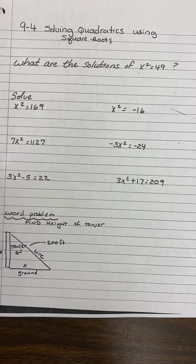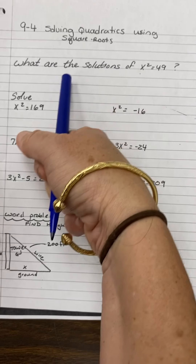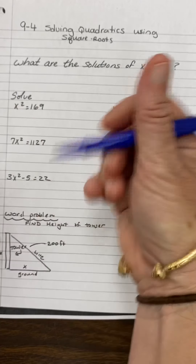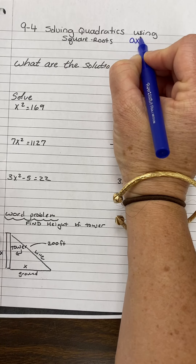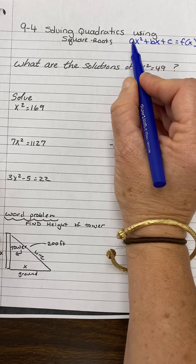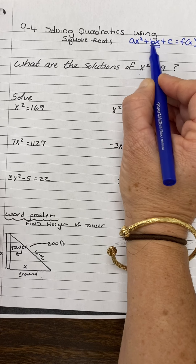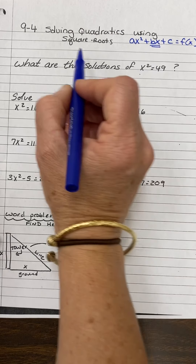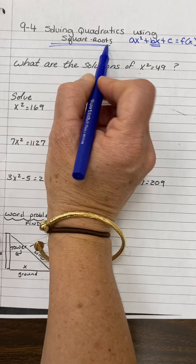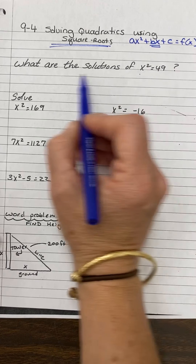Hi, you guys. Today I'm going to show you how to solve a quadratic by square roots. What's important is for you to know when we're going to use this method. In standard form — this is standard form here — and we have an A, B, and C. If we're missing the B term, if we don't have an X by itself, then we can use this method. And this method is wonderful; we have to use it when we don't have that. So here's an example.